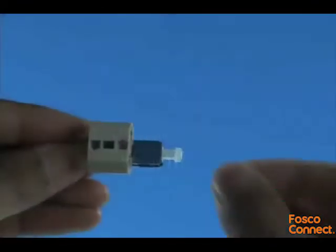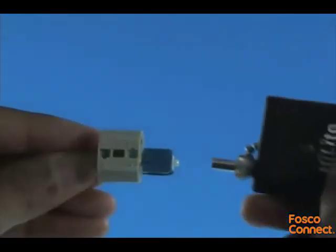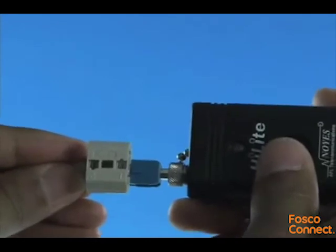Option B: Termination using a visual fault identifier. Remove the dust cap from the fast connector and insert the connector into the VFI. Turn on the VFI.